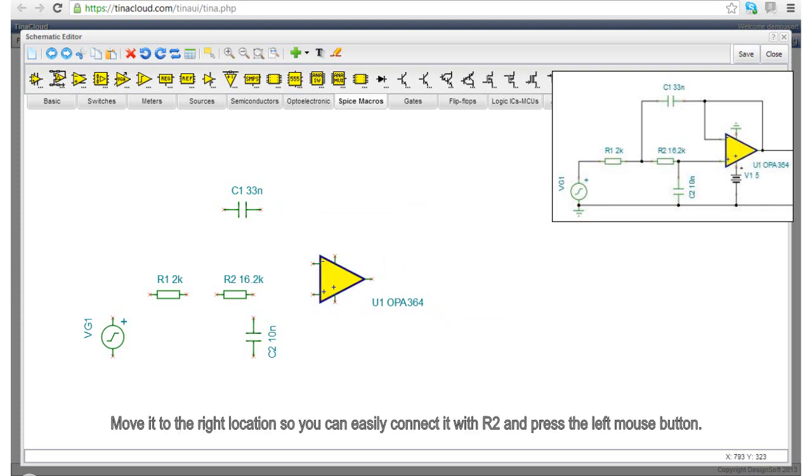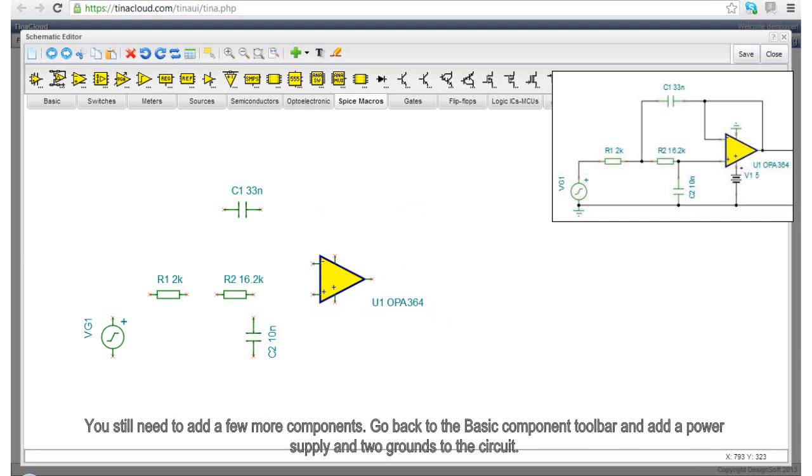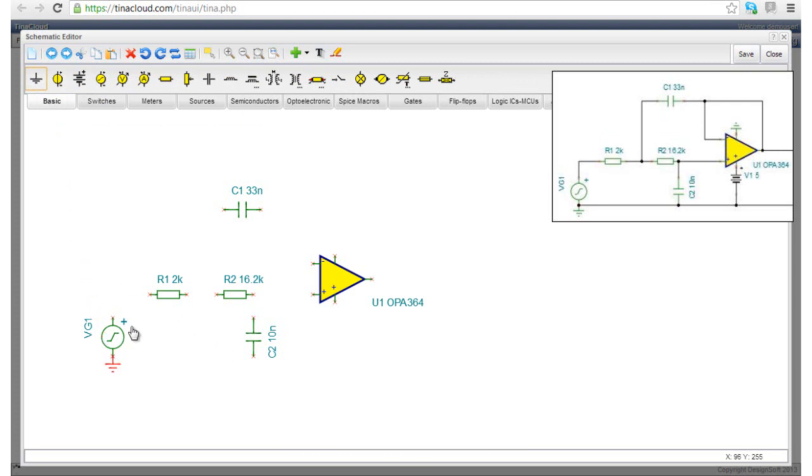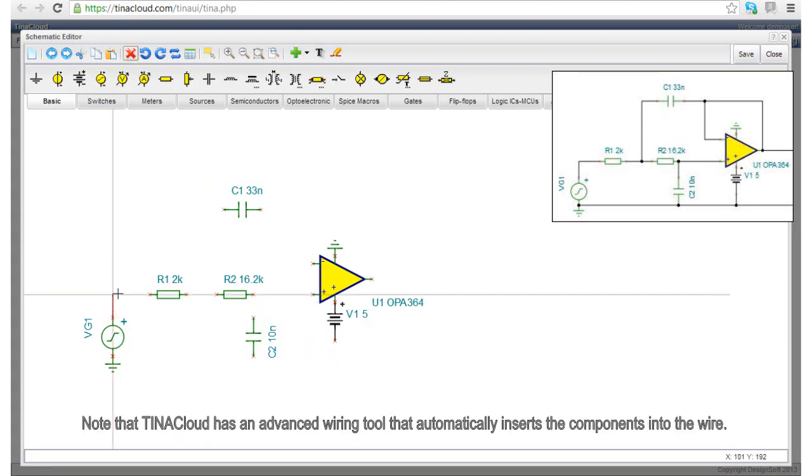Move it to the right location so you can easily connect it with R2 and press the left mouse button. You still need to add a few more components. Go back to the basic component toolbar and add a power supply and two grounds to the circuit. Now, you can wire up the circuit. Note that TINA Cloud has an advanced wiring tool that automatically inserts the components into the wire.